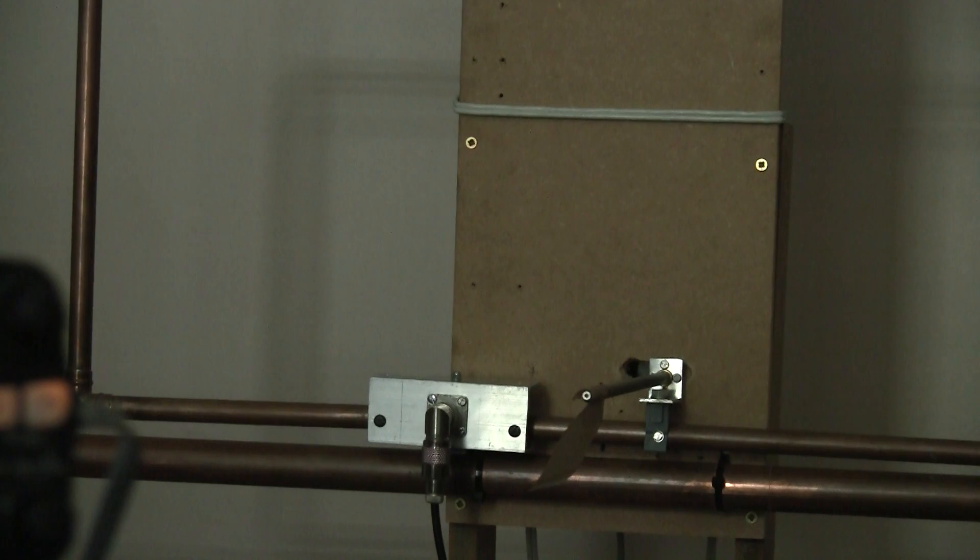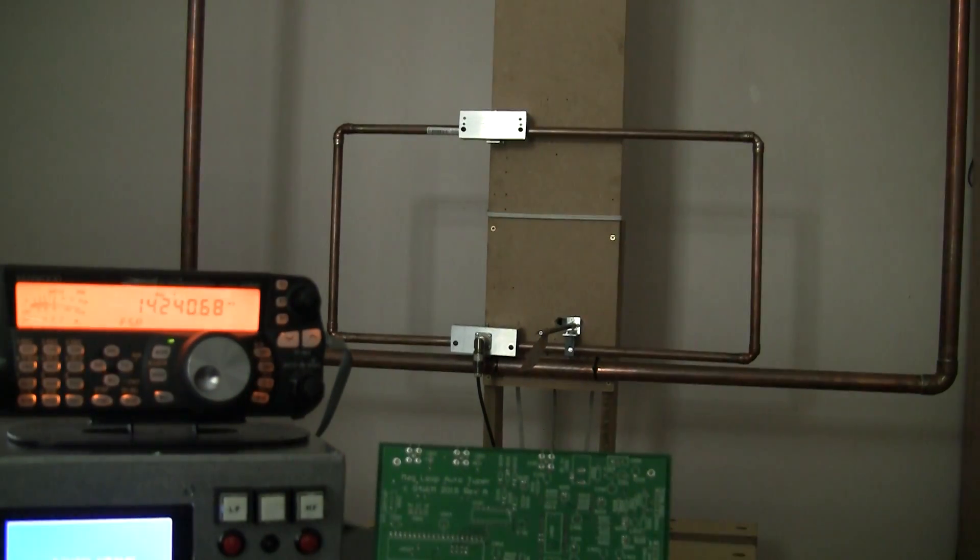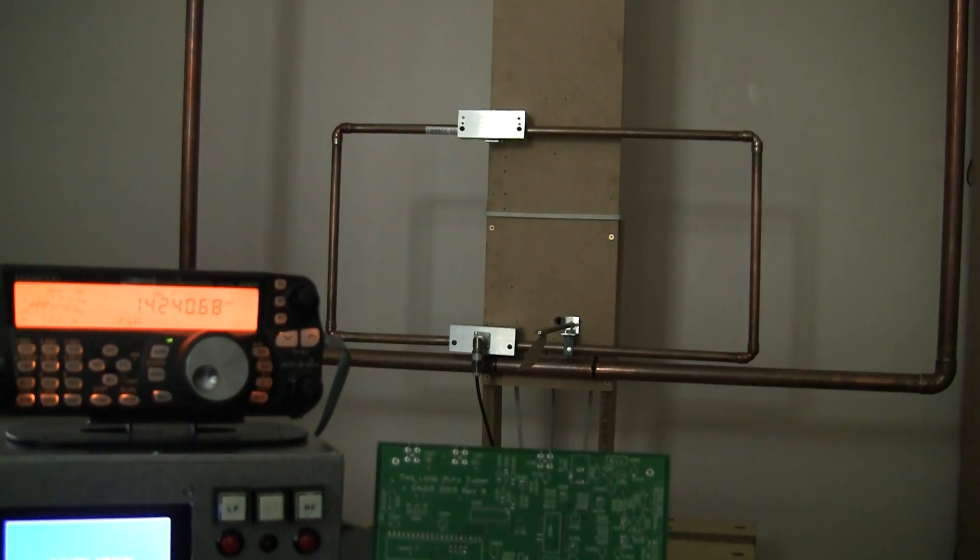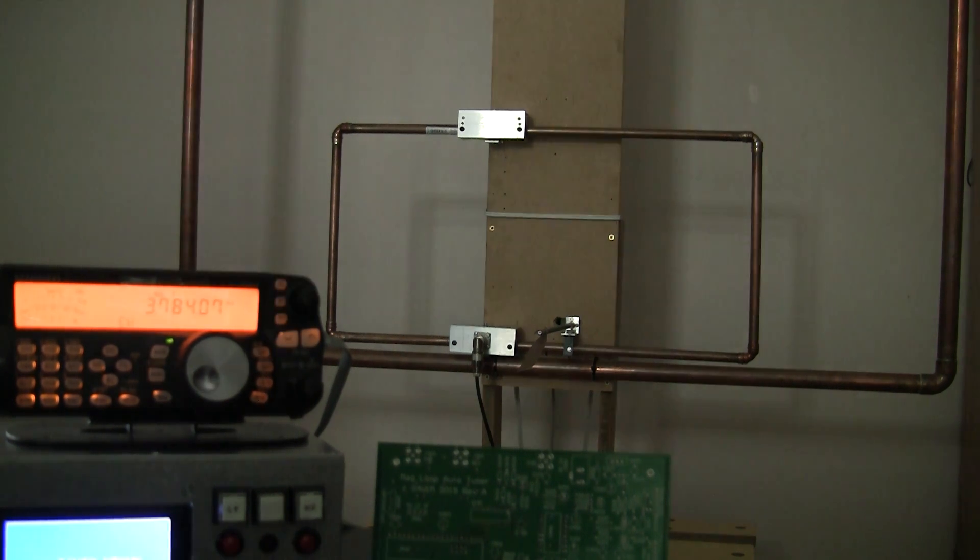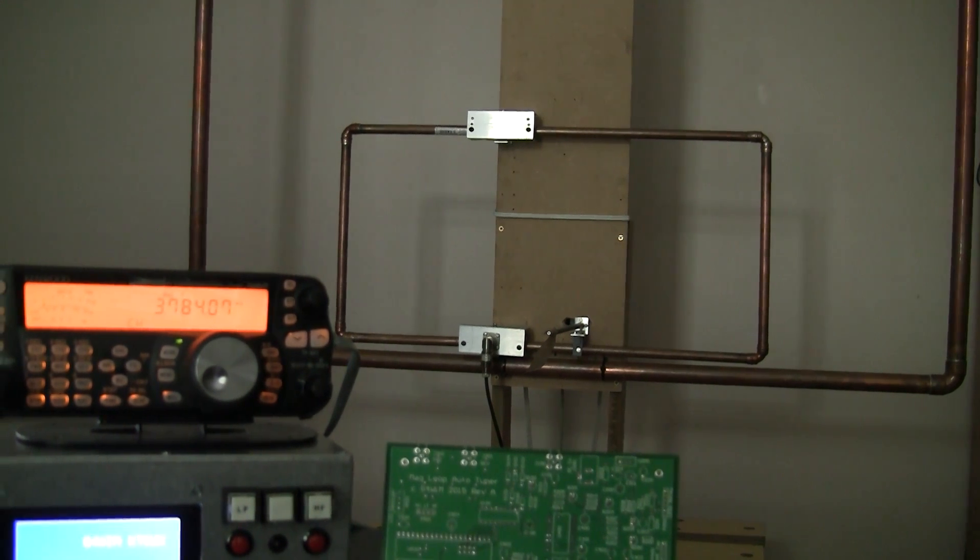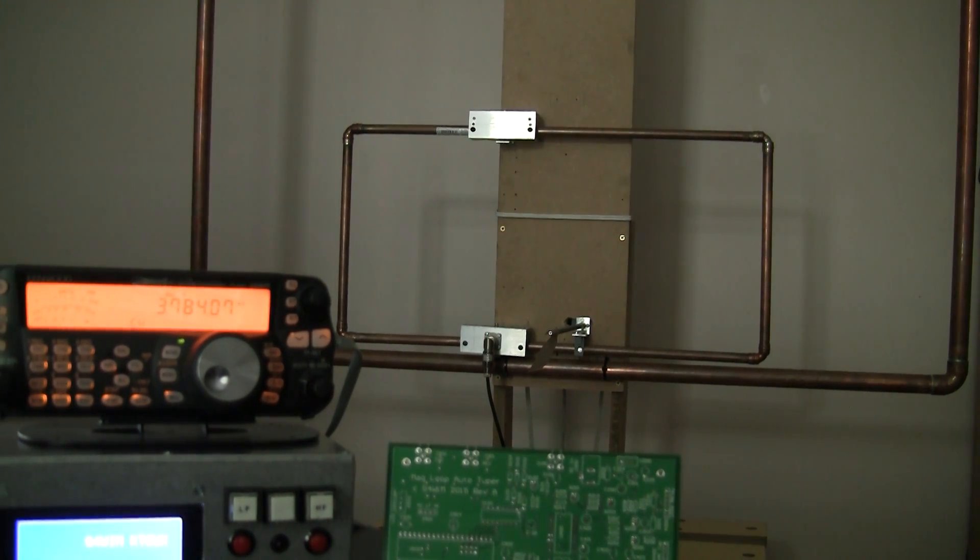We'll just do that again. We'll make it tune down to the 80 meter band again. And we'll just look at what the loop does. So I'll just change this band setting on the Kenwood to 3.78 MHz. And if you watch the loop now, you'll see it adjust itself to where it needs to be for the best match. Transmitting.